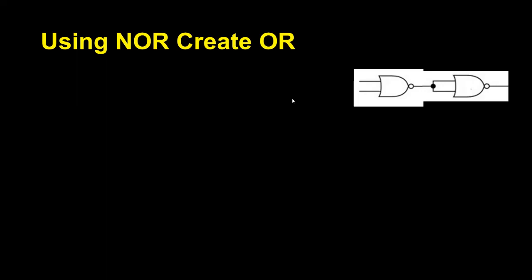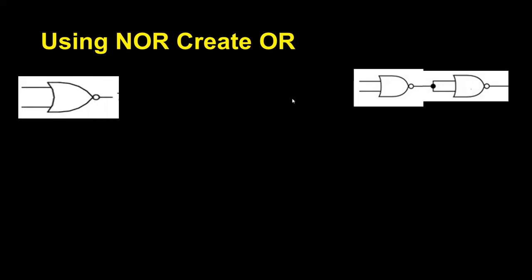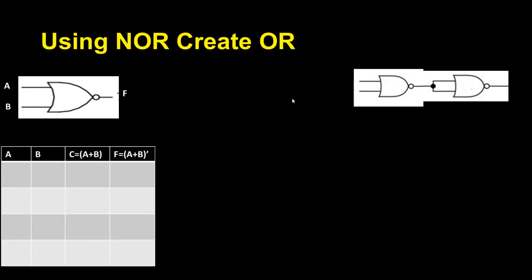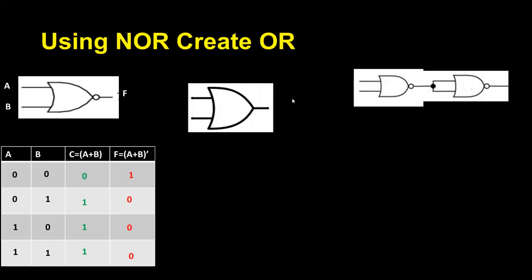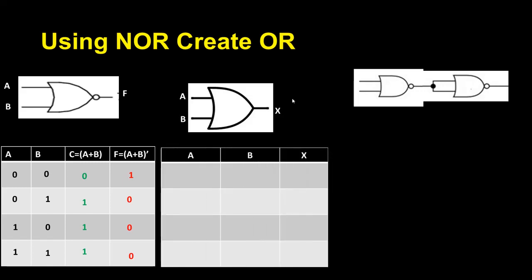Finally, using a NOR gate I want to create an OR gate. You can see the final circuit here. This is my NOR gate with two inputs. I write the possible combinations and the NOR gate output, then I create the OR gate truth table with two inputs.